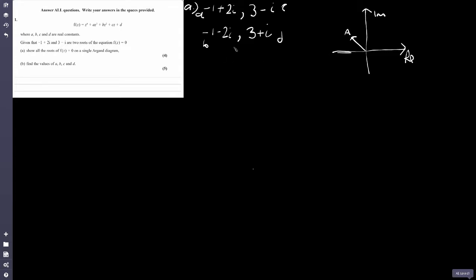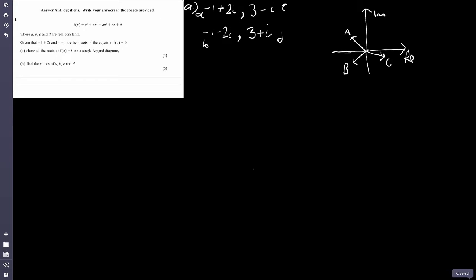B is minus 1 minus 2i, the complex conjugate of A — so we go 1 across to the left again and down 2 this time. C is 3 minus i — 3 units along the real axis and down 1 on the imaginary axis. And then finally D is plotted at 3 along and up 1. Make sure you use a ruler and make it look neater than mine, but you should get something that looks roughly like that. That's the first four marks.